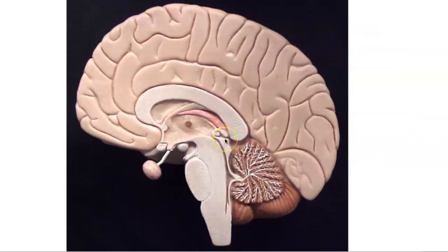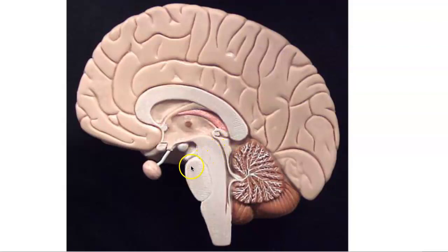This is your classroom brain model, and this is on your worksheet. By now you should have almost everything labeled. We know this is the brain stem. This part is the midbrain. Here is the superior colliculus and inferior colliculus — colliculi is plural, but you're only seeing half of them. Here is the pons. And now we're going to go on to the lower portion of our brain stem, the medulla oblongata.